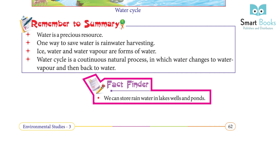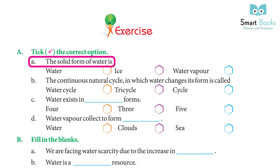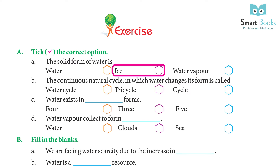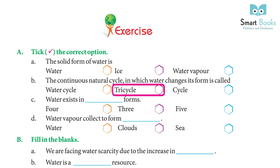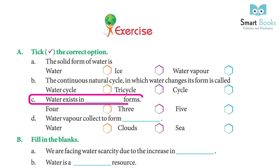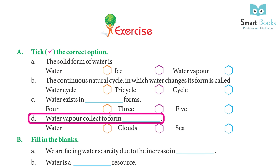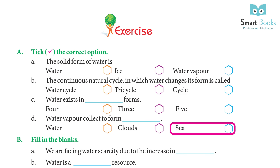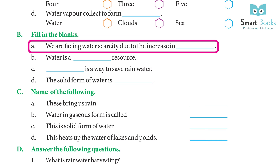Exercise A — Take the correct option: (a) The solid form of water is ice. (b) The continuous natural cycle in which water changes its form is called the water cycle. (c) Water exists in three forms. (d) Water vapor collects to form clouds.